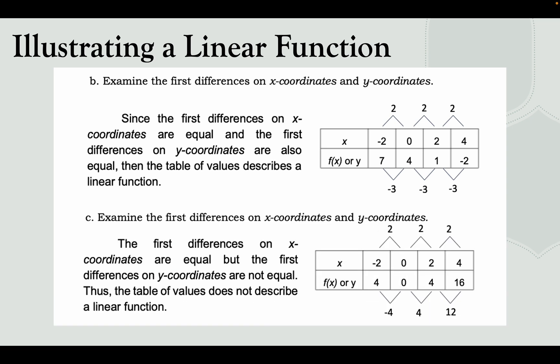In example C, for x: 4−2=2, 2−0=2, 0−(−2)=2 — equal. For y: 16−4=12, 4−0=4, 0−4=−4 — not equal. Since the first differences of the x-coordinates are equal but the differences of the y-coordinates are not equal, the table of values does not describe a linear function.